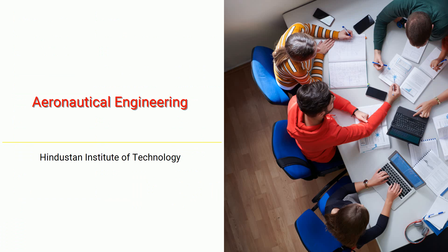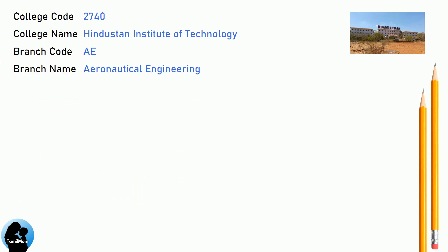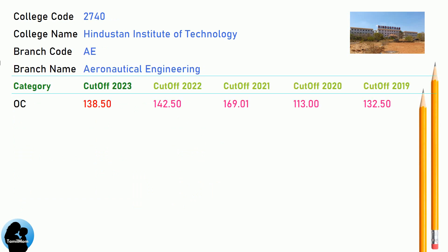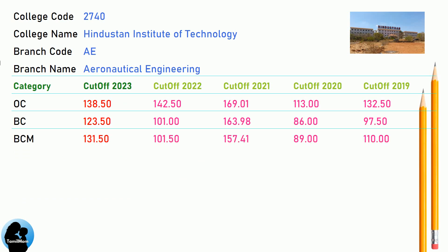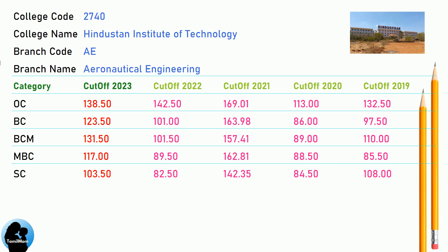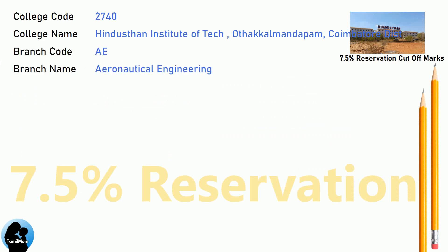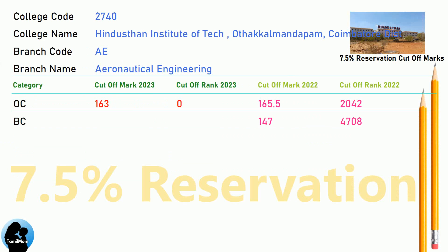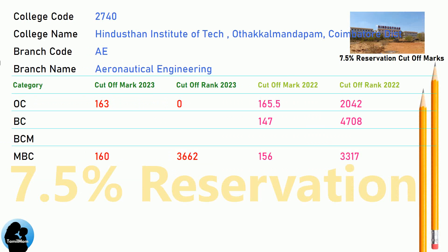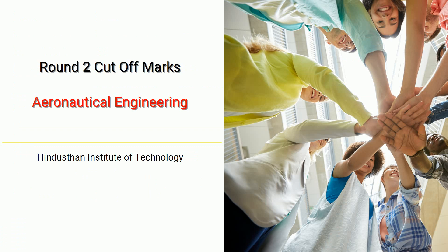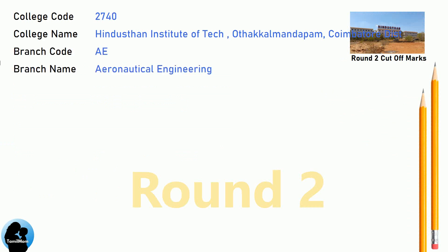DNEA Cut-Off for Hindustan Institute of Technology in Aeronautical Engineering. DNEA 7.5 Reservation Cut-Off for Hindustan Institute of Technology in Aeronautical Engineering. DNEA Round 2 Cut-Off for Hindustan Institute of Technology in Aeronautical Engineering.